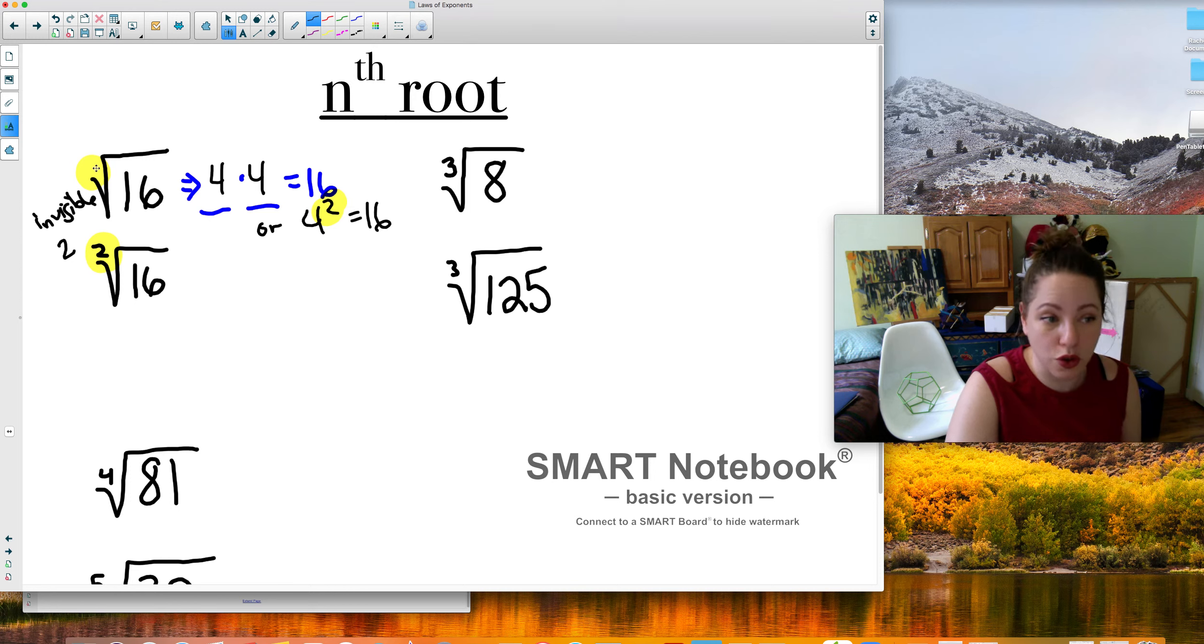Okay, so if there's no number, you draw a 2 in. Just like if there's no number on an exponent, there's a 1 right there. We know that. So what does a third root of 8 mean? This would be called third root or cube root, right? Because we know cubed.